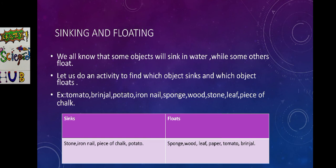Now we are going to discuss a special character, that is the sinking and floating character of different objects. Do you know what is meant by sinking? Sinking means to go down towards the bottom of a liquid or a soft substance. What is meant by floating? To move slowly on water or in the air. We all know that some objects will sink in water while some others float.